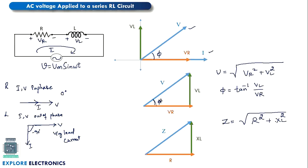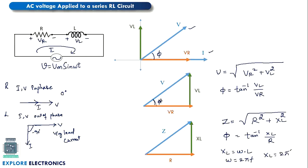So Z equals the square root of R² + XL². The power factor angle can again be written as tan⁻¹(XL / R). Here XL is the reactance of the inductor, which can be written as ω × L, where ω is the angular frequency and L is the inductance. We can also write ω as 2πf, so XL becomes 2πfL. This is the impedance of the circuit.